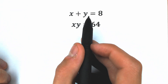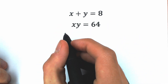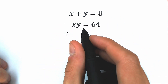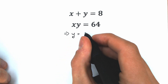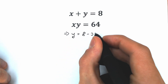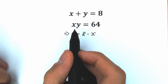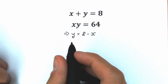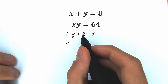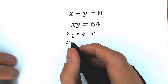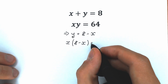First of all, we need to express x or y from the first equation. Let's start with y. So from the first equation, we express y. As a result, we have y equal to 8 minus x. Now we need to plug this y into the second equation. So we have x times y, but y equals 8 minus x, so we have x times (8 minus x) equal to 64.